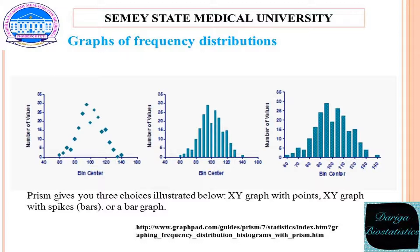Graphs of frequency distributions — Prism gives you three choices illustrated below: an XY graph with points, an XY graph with spikes, or a bar graph. The last two graphs look very similar, but the graph on the right is a bar graph, while the one in the middle is an XY graph plotting bars or spikes instead of symbols. The graph in the middle has X values, so you can fit a Gaussian distribution to it.